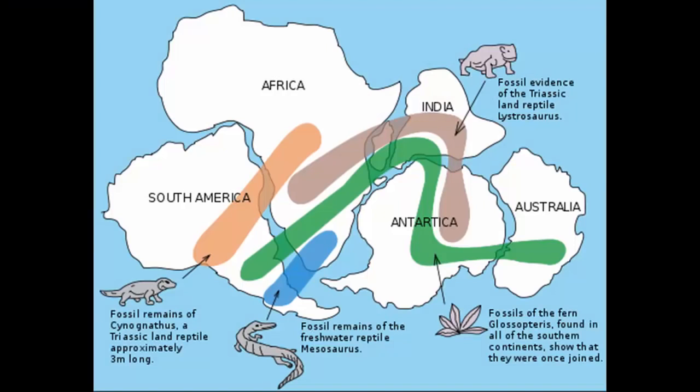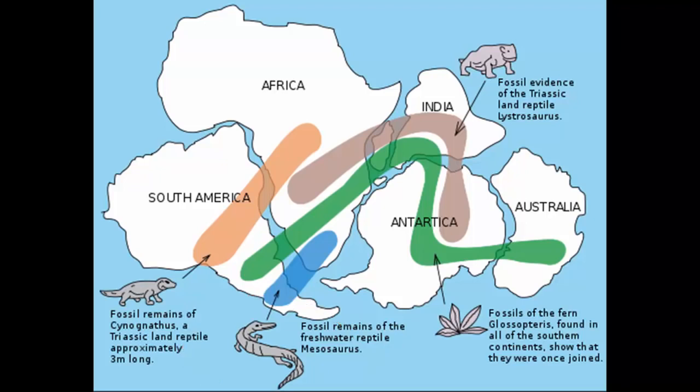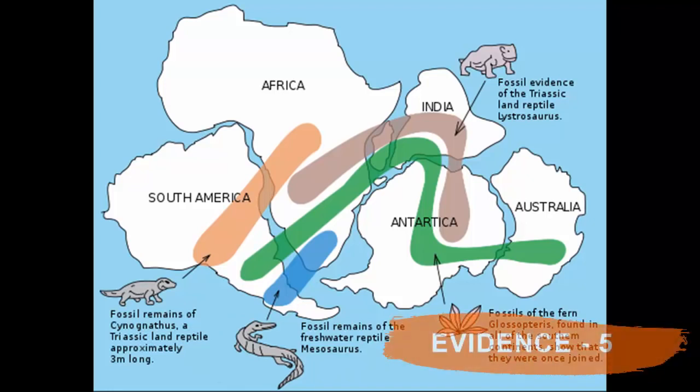Similarly, Mesosaurus is a reptile — an extinct species, no longer available. The skeleton of this reptile has been found in regions of Southern Africa and South America, again reinforcing the fact that these two continents were once linked together.